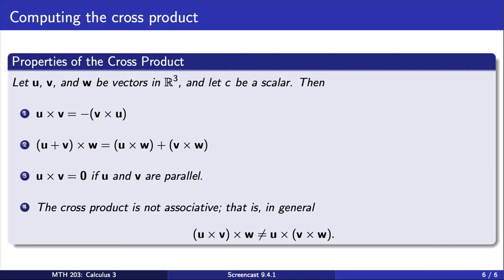Lastly, we see that the cross product is not associative. Again, this shows that the order in which the vectors are written in the cross product matters.